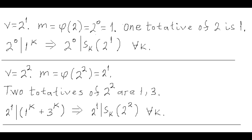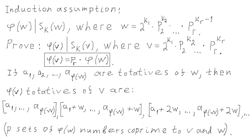Let's prove the internal induction step not just for numbers of the form 2^L, but for any number that satisfies the condition of this problem and has r prime numbers with exponent of the highest prime k_r minus 1. We'll prove that if the statement holds for that number, it also holds for the same number with the exponent of the highest prime incremented by 1. This proves that for given r, any such number satisfies the statement regardless of the exponents k1, k2, up to kr.